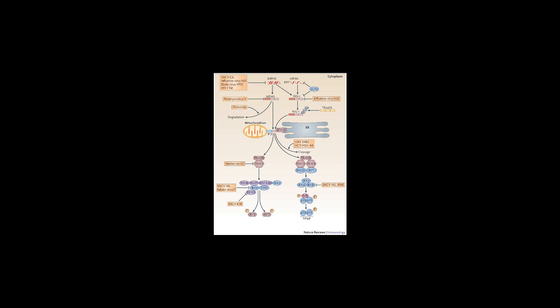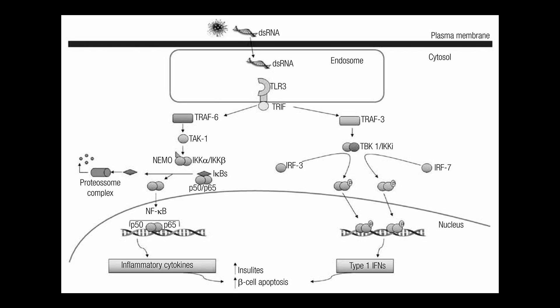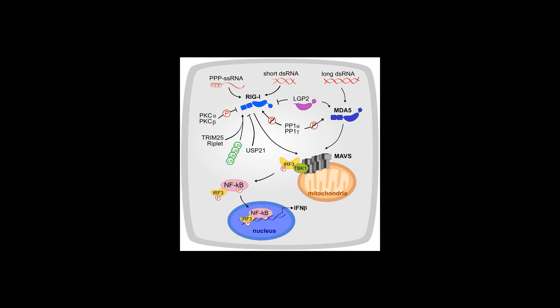There are three RLRs: RIG-I, MDA5, and LGP2, that act as sensors of viral replication within the cytoplasm of human cells, and each has a DEXD H-box helicase structure.